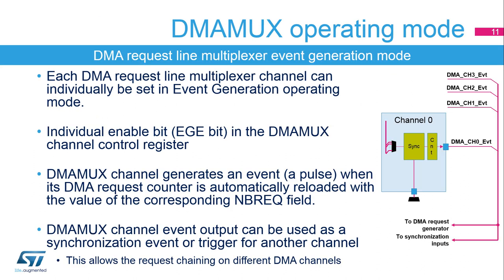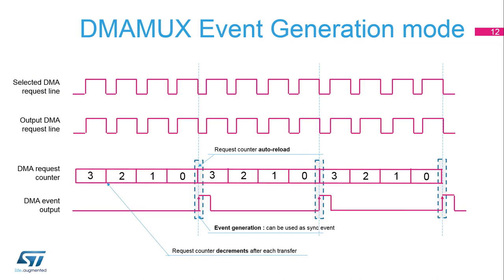When enabled, the multiplexer channel generates an event with a pulse when its DMA request counter is automatically reloaded with the value of the corresponding NB-REQ field. The event generator is enabled by setting the EGE bit in the control register of the corresponding multiplexer channel. Only four channels support the generation of events: channels 0 to 3. When in event generation mode, a channel generates an event pulse when its DMA request counter is automatically reloaded. The request counter is decremented with the execution of a DMA request. The DMA-MUX channel event output can be used as a synchronization event or trigger for another channel.